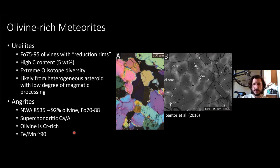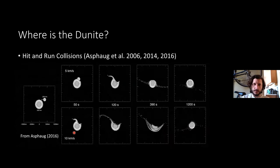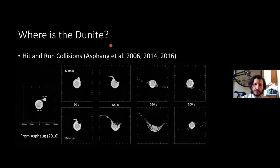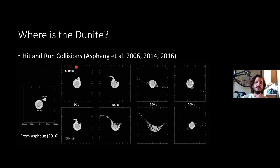So those are the few olivine-rich meteorites in the collection, and they're totally different from what I'm about to describe. Asfaug et al., in a string of papers, has suggested that hit-and-run collisions are responsible for stripping the olivine from these differentiated planetary bodies — essentially showing a 500-kilometer object hit at high speed by a smaller object.